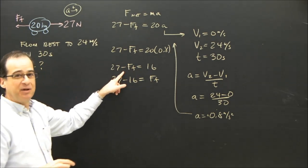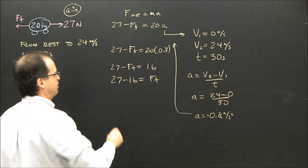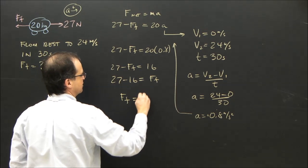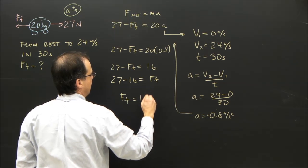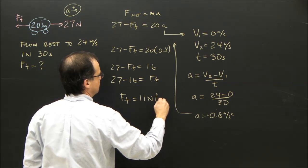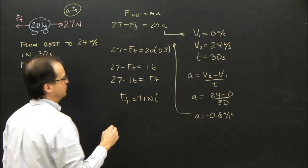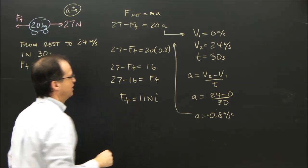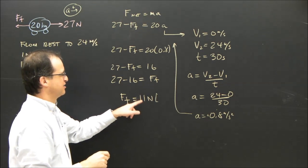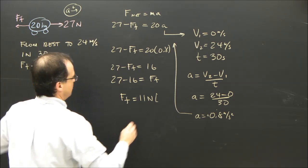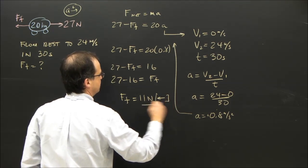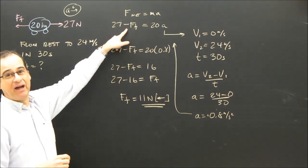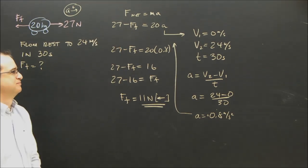The 16 comes on this side, becomes negative. The force of friction goes on that side, becomes positive. So the force of friction is 27 minus 16 is 11 newtons, and it's positive. 27 minus 16 is 11, and from the diagram I can see, it's to the left. It didn't come out negative because I already said it was backwards.